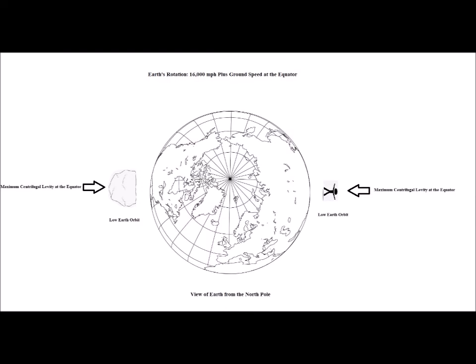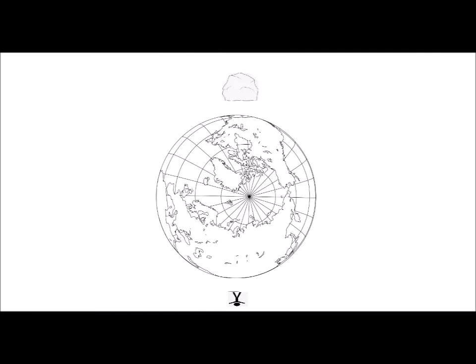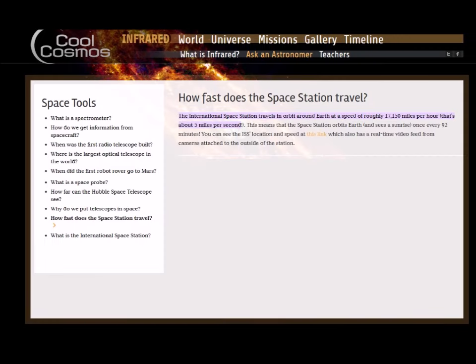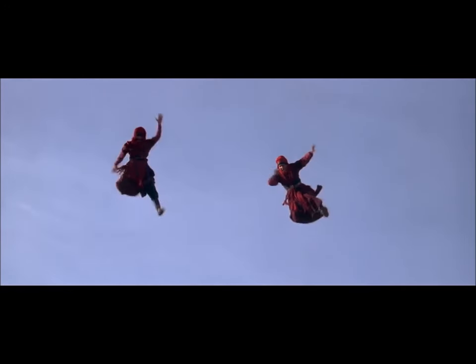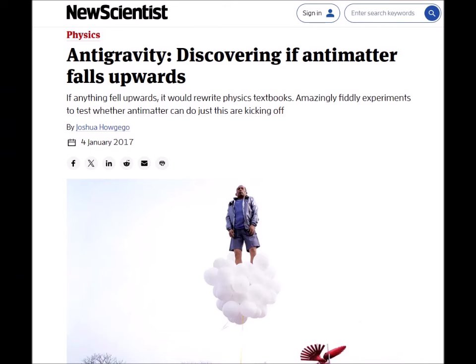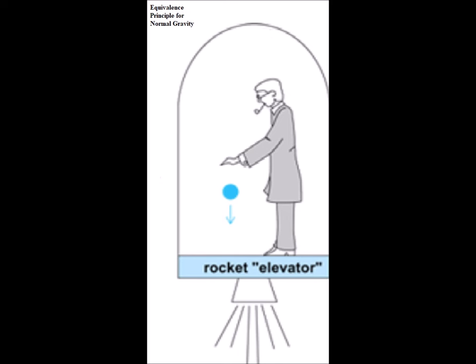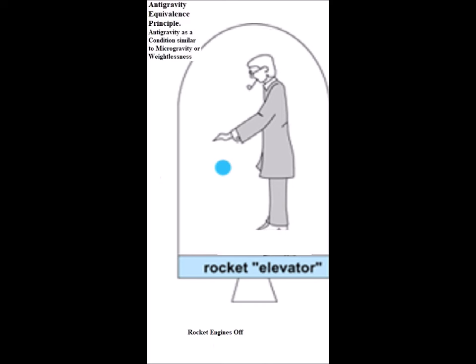If the ground speed were increased to 16,000 miles per hour, loose objects would hover above the earth's surface in what we'd term low Earth orbit. The space station travels at about 17,400 miles per hour to stay in orbit. If ground speed were increased even further, the centrifugal force would overwhelm gravity's centripetal force, and objects would be propelled from the earth altogether — appearing to fall away from it — which we would describe as negative gravity. So it seems the equivalence principle for gravity could be extended to include conditions of motion reflecting anti-gravity and negative gravity as well.